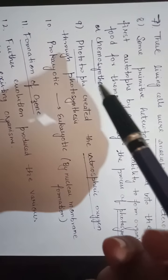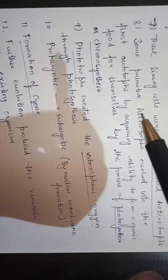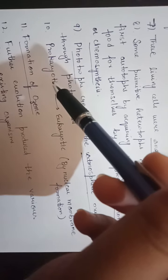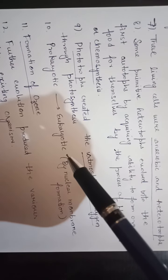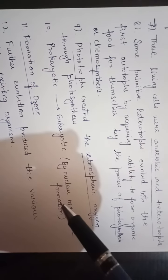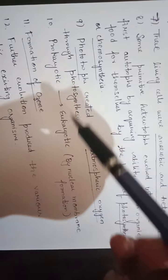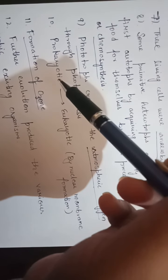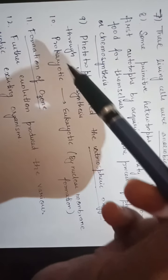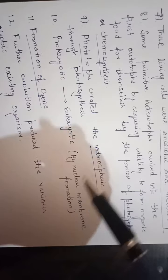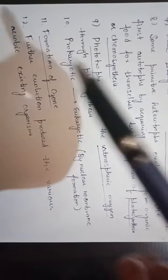When prokaryotic phototrophs formed, eukaryotic structures also appeared from the prokaryotes by nuclear membrane formation. The difference between them is that prokaryotic organisms do not have a nuclear membrane — they have a nucleoid — whereas eukaryotic organisms do have a nuclear membrane. So by the process of evolution, eukaryotic organisms formed from prokaryotic organisms.